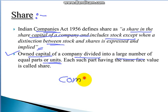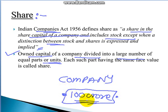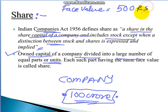For example, if you want to set up a company and you require 100 crore rupees, it is generally not possible for one owner alone to arrange that amount. Thousands of people need to come together. The company decides a face value for the share — the minimum value of one share — say, 500 rupees each.